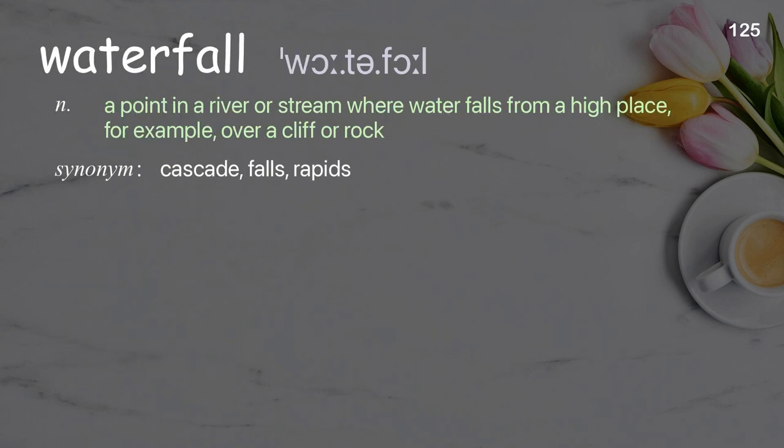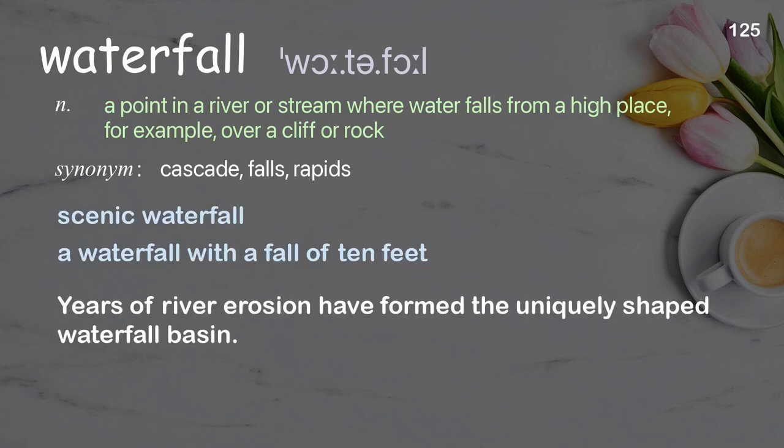Waterfall: a point in a river or stream where water falls from a high place, for example, over a cliff or rock. Examples: scenic waterfall, a waterfall with a fall of 10 feet. Years of river erosion have formed the uniquely shaped waterfall basin.